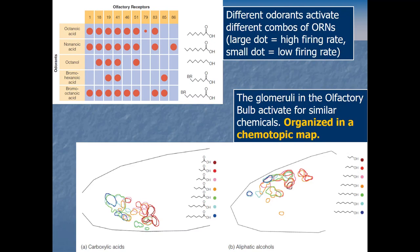We call this chemotopic mapping. Recall that in A1 we had tonotopic mapping based on sound frequency; in S1 we had somatotopic mapping based on body parts; in V1 we had retinotopic mapping based on retinal location. Now in the olfactory bulb we have chemotopic mapping based on chemical structure.